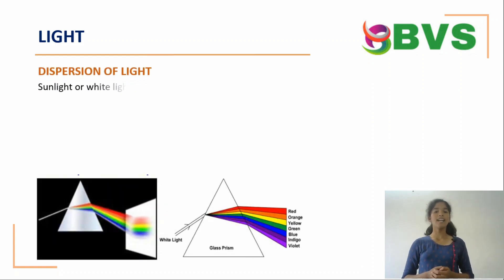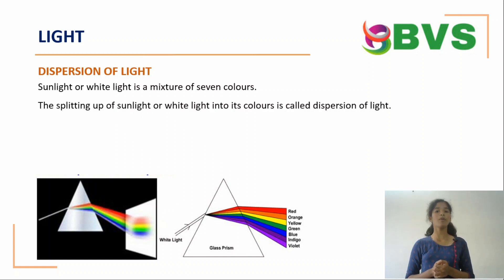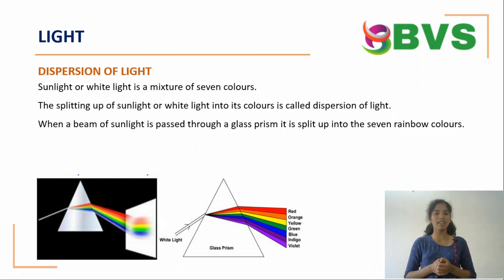Dispersion of light. Sunlight or white light is a mixture of seven colors. The splitting up of sunlight or white light into its colors is called dispersion of light. When a beam of sunlight is passed through a glass prism, it is split up into 7 rainbow colors.